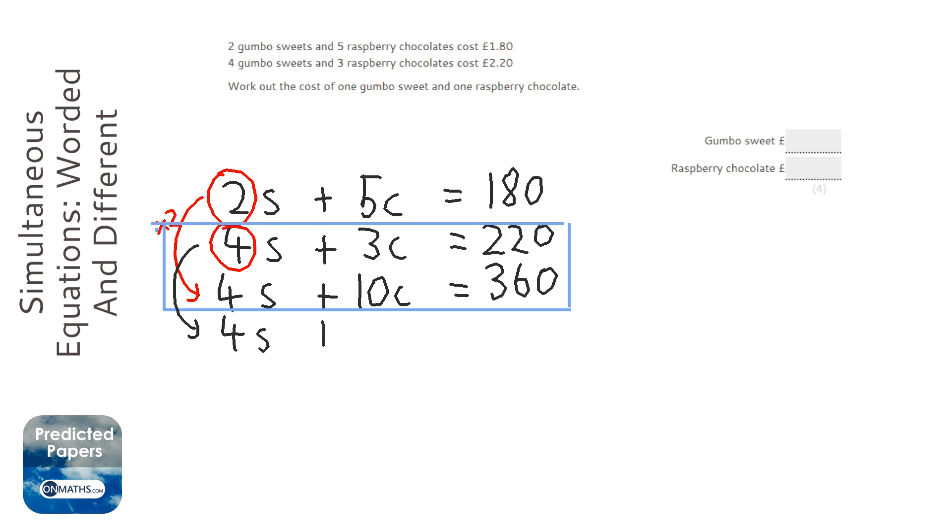So 4S plus 3C equals 220—which is technically the second equation again. I'm just copying it again so that when I subtract, it can make them positive and make it a bit easier.